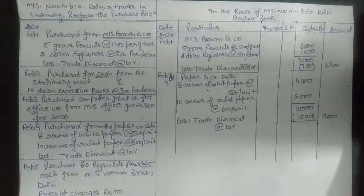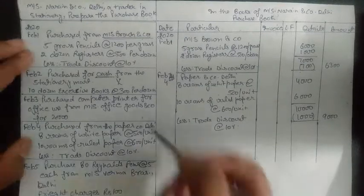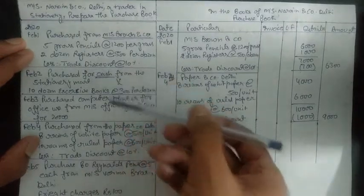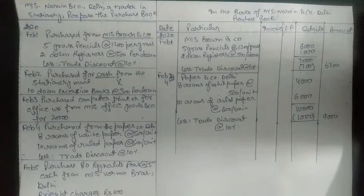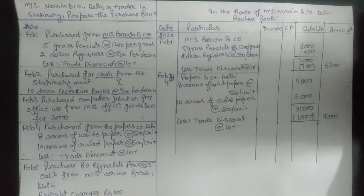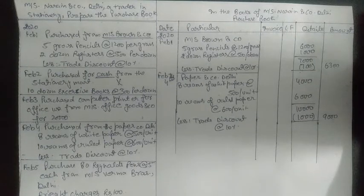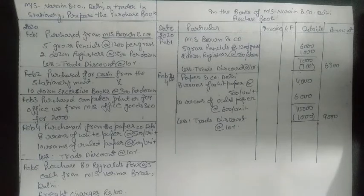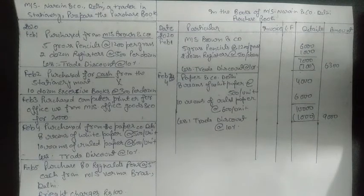So we have posted stationery purchases from Mr. Brown and from Paper and Company Delhi. On Feb 2 we had a cash purchase, so it goes to the cash book, not the purchase book. On Feb 3 we purchased fixed assets, which go to the journal proper. The purchase book is only for transactions in which we are trading. Mr. Narain deals in stationery, so only stationery purchases are recorded here. Other transactions like sale of old newspapers or purchase of machinery go to the journal proper.